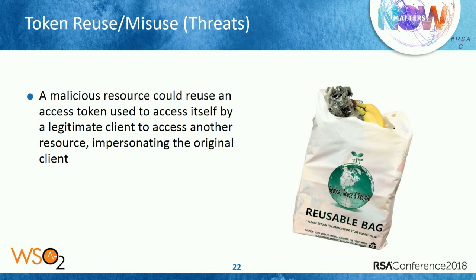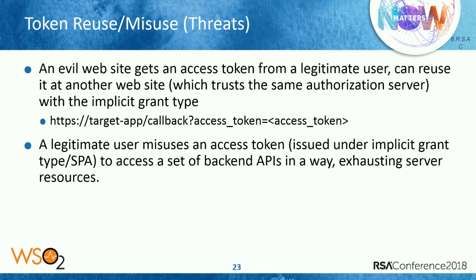The other threat vector is token reuse or misuse. For example, if you log into a web app using Facebook, the web app gets an access token under your Facebook account and uses it to access the graph.facebook.com/me endpoint to find out details about you. If that web app is under an attacker, they may use the same access token to log into a similar web app that relies on Facebook login — constructing a URL supporting implicit grant type, passing the access token and logging in just like the original user. This is token misuse.